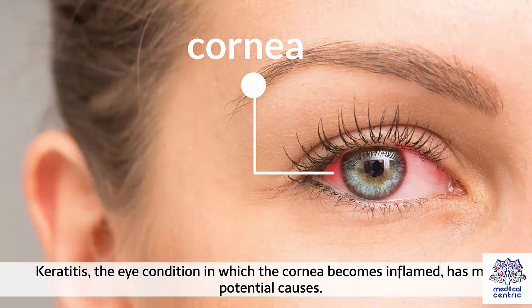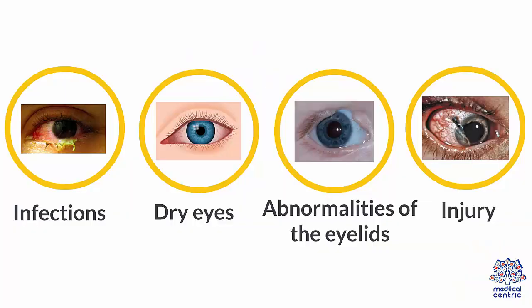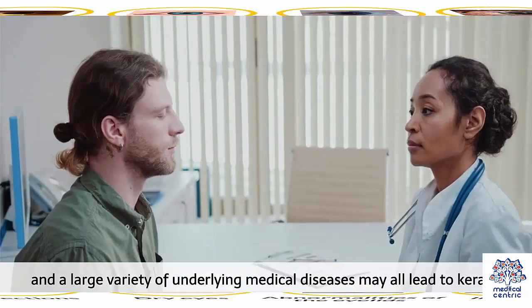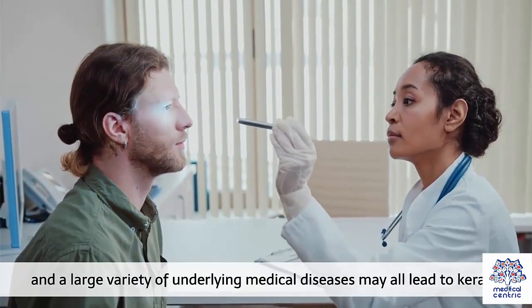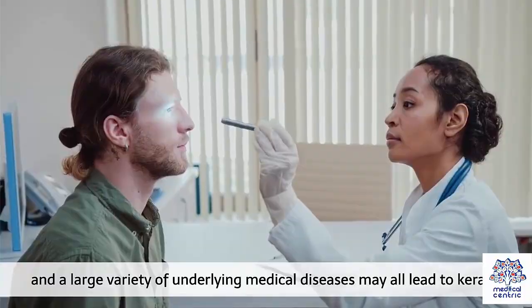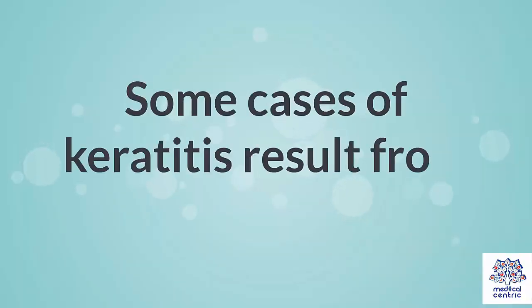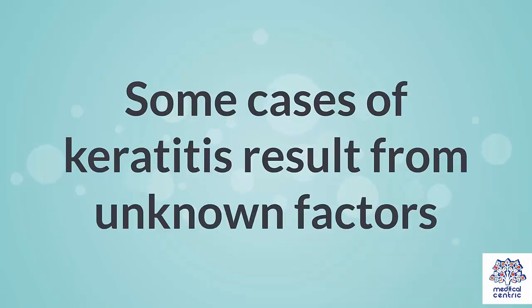Keratitis is the eye condition in which the cornea becomes inflamed, and it has many potential causes. Various types of infections, dry eyes, abnormalities of the eyelids, injury, and a large variety of underlying medical diseases may all lead to keratitis. Some cases of keratitis result from unknown factors.